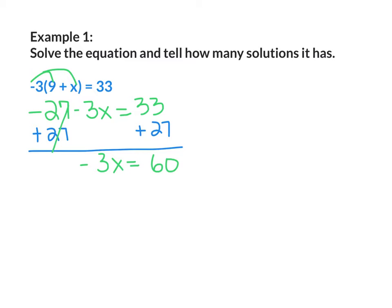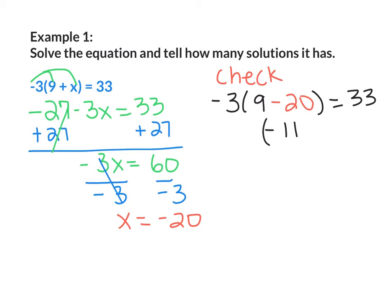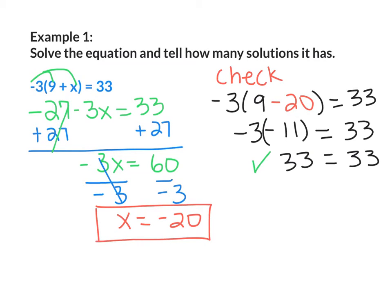Since negative 3 and x are next to each other, that means multiplication, so I'm going to divide both sides by negative 3. Negative 3 divided by negative 3 cancels out, giving x equals 60 divided by negative 3, which is negative 20. I'll check by plugging negative 20 back into the original equation: negative 3 times (9 minus 20) equals 33. 9 minus 20 is negative 11; negative 3 times negative 11 is positive 33. The left-hand side equals the right-hand side, so x equals negative 20 — one solution.